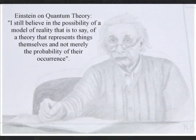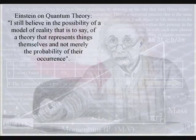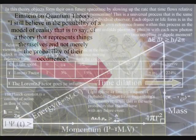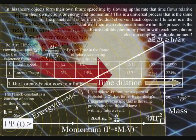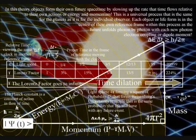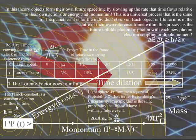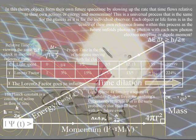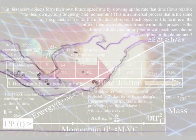This might sound far-fetched, but we already have an interactive process in Einstein's theory of relativity, with energy slowing up the rate that time flows, forming a curvature of space-time relative to the energy. In this theory, this represents a universal process of energy exchange.